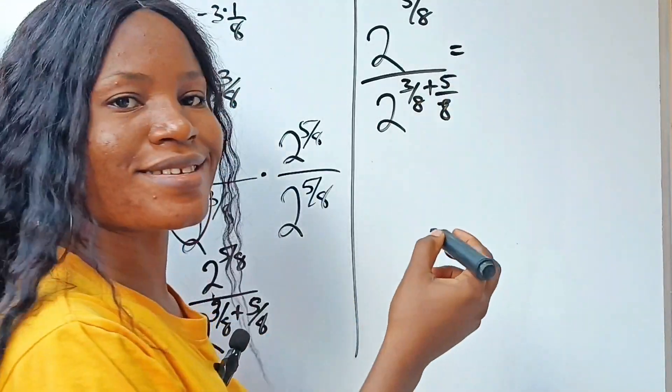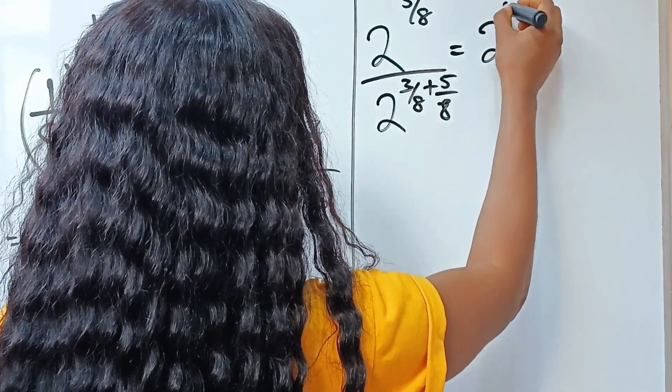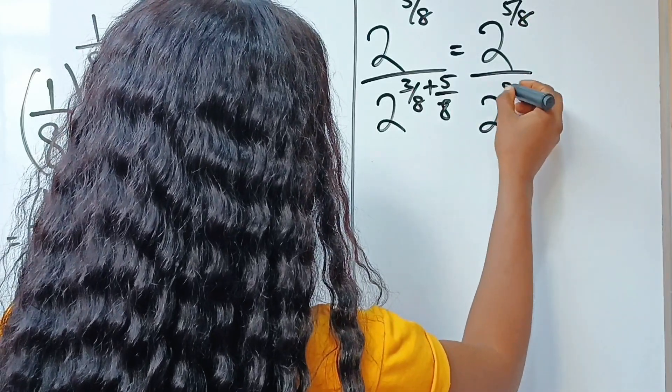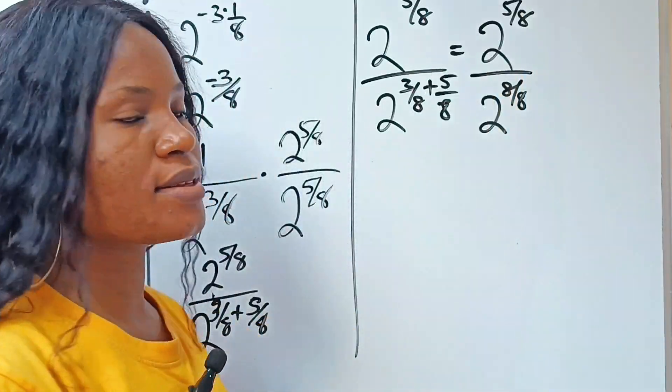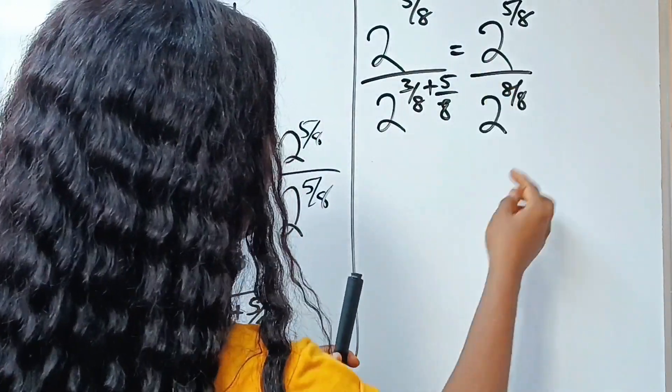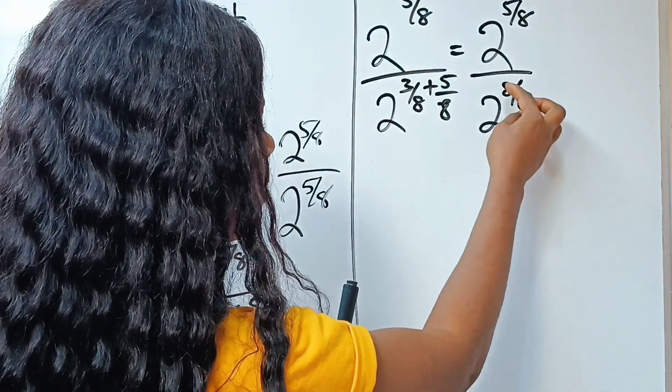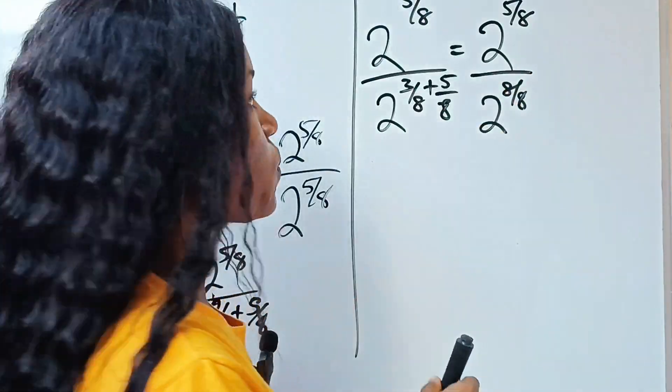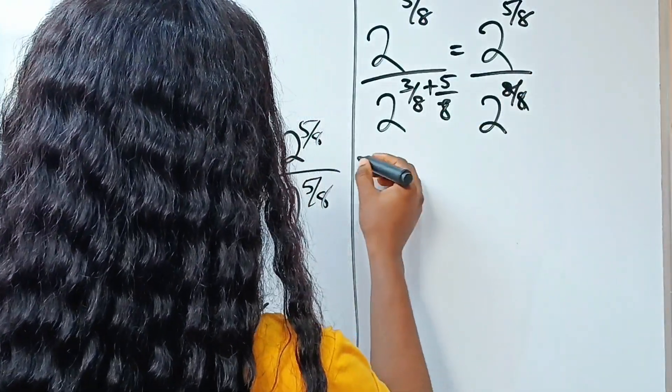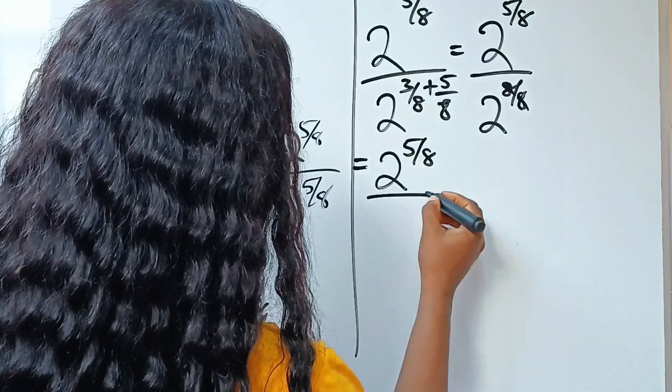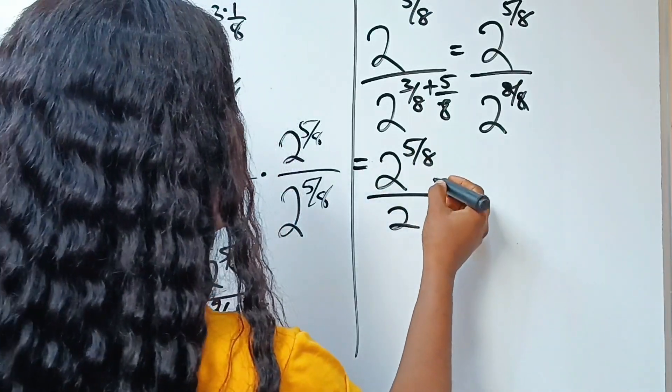This is equal to 2 to the power of 5 over 8 divided by 2 to the power of 8 over 8. Notice that we've cancelled what we have here entirely and we have only 2 here because 8 divided by 8 will give us 1. So what we have is 2 to the power of 5 over 8 divided by 2.